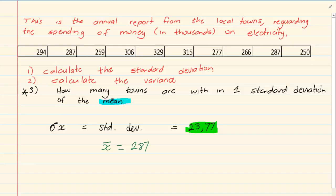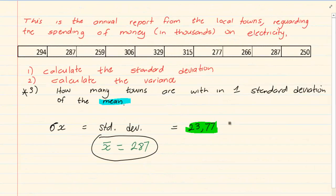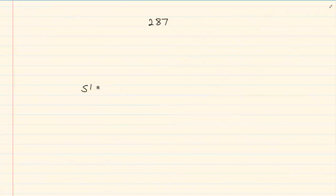Now it says how many towns are within one standard deviation of the mean. Now what that means is if you take the mean which is the average, one standard deviation is 23,77. So when they say one standard deviation it means I'm deviating, I'm going one this way and one this way. Which means I'm going to say 287 minus 23,77 which is equal to 263,28.